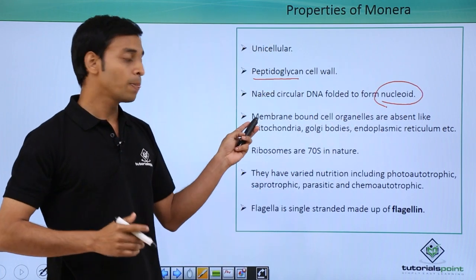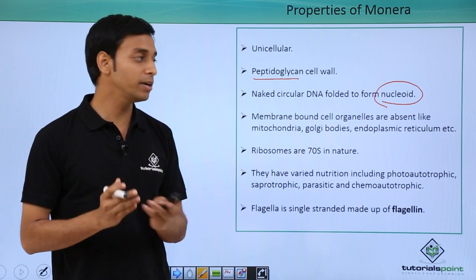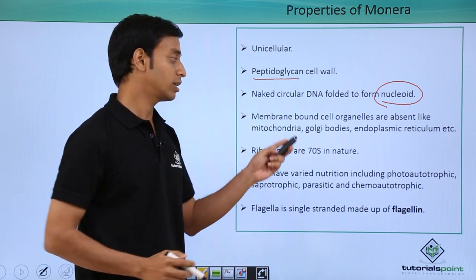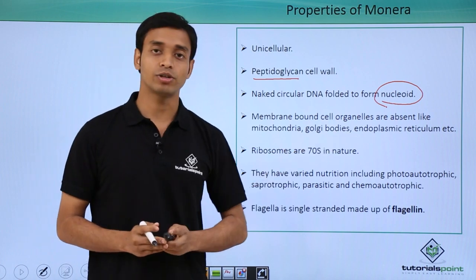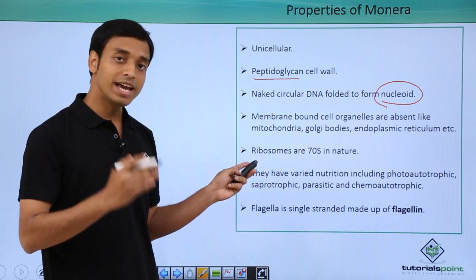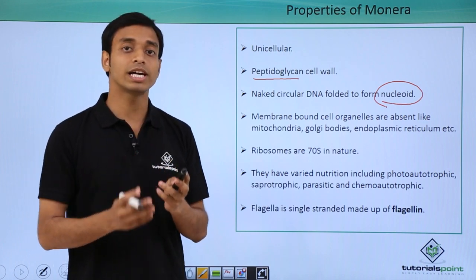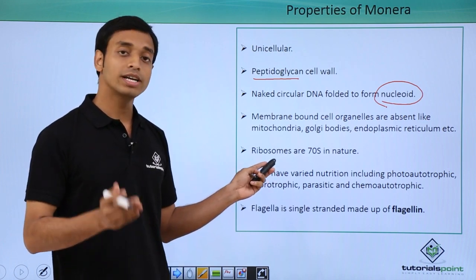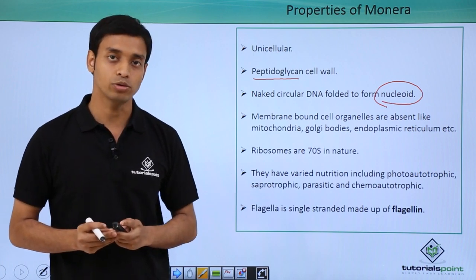Bacteria do not have any membrane-bound organelles like mitochondria, Golgi bodies, or endoplasmic reticulum. However, they do have ribosomes — molecules which help in protein synthesis — and these are of the 70S type.